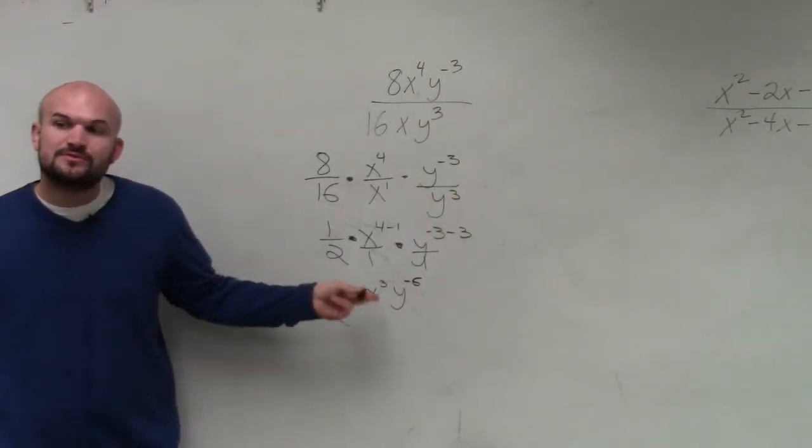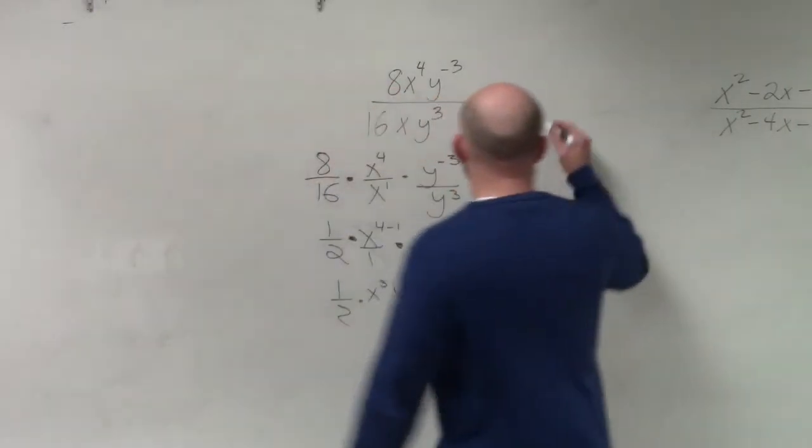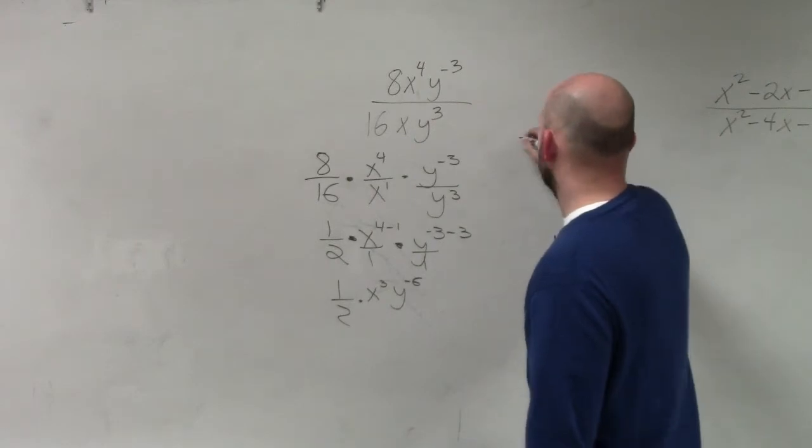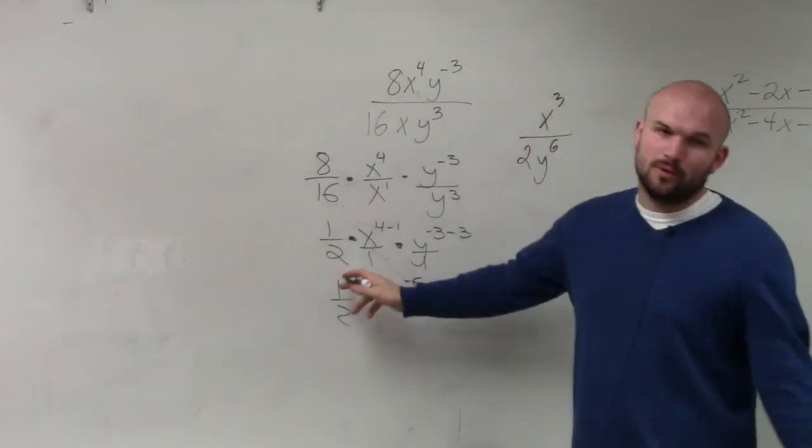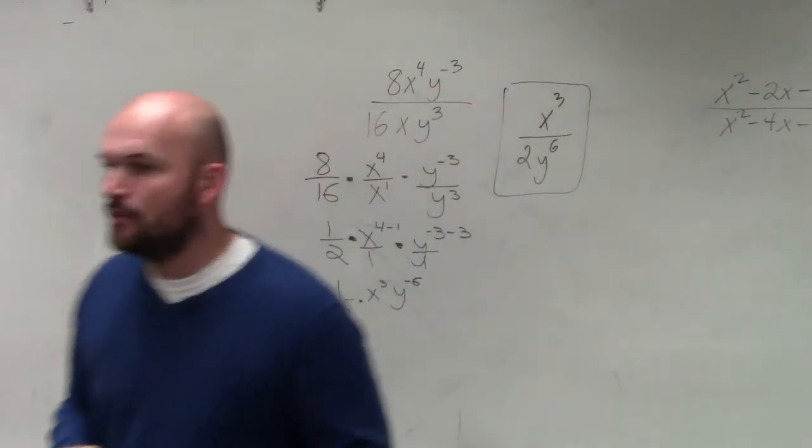So now, we always want to rewrite this with our y being positive. So my final answer is going to be x cubed over 2y to the sixth. I don't need to keep the 1 there because it's just multiplication. So that would be our final simplified form.